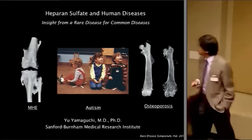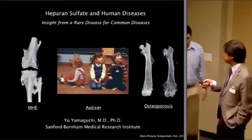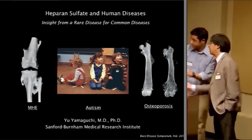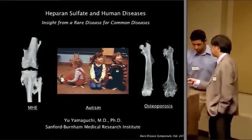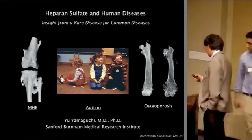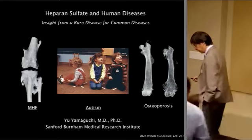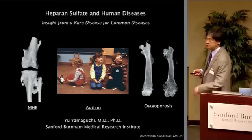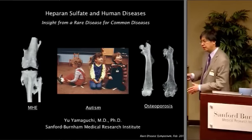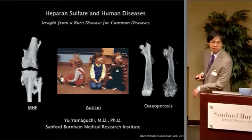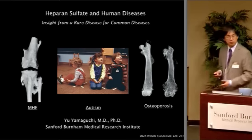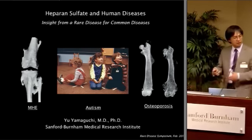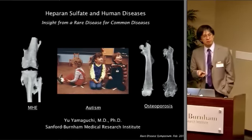So today I'm going to talk about a heparan sulfate disease called MHE, and this is a bone disease caused by mutation of EXT1 or EXT2 genes. But I'm going to tell you that research on MHE gave us some information about the potential mechanism of autism in general. I probably don't have time to talk about osteoporosis, but that's another common disease for which we get some insight from MHE research.